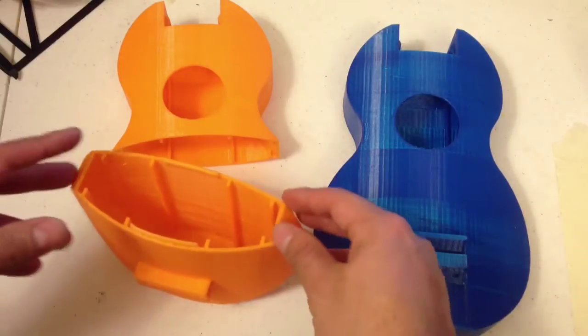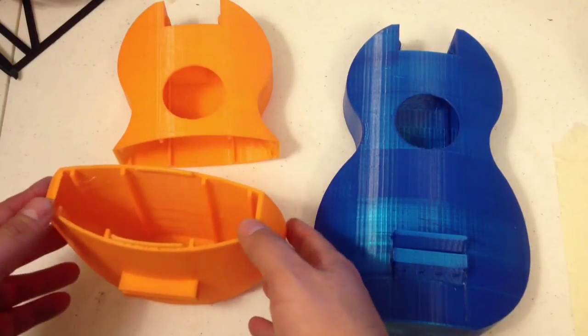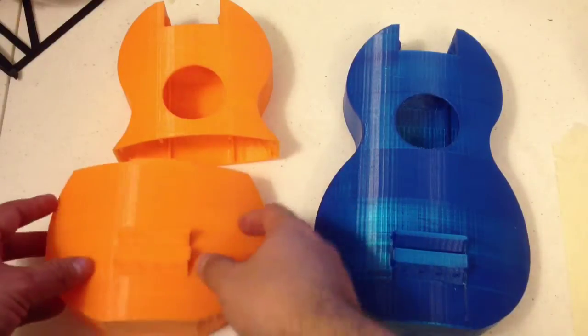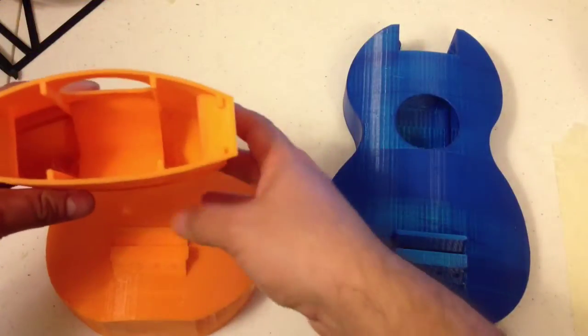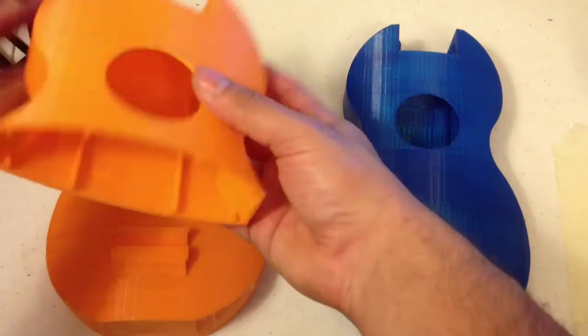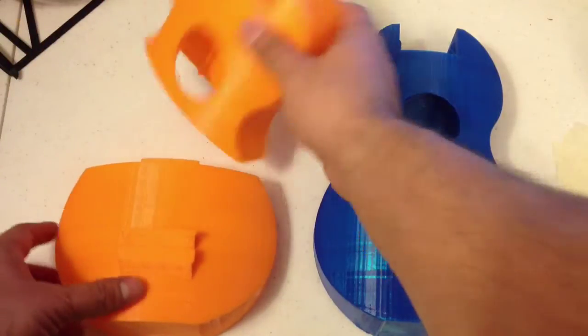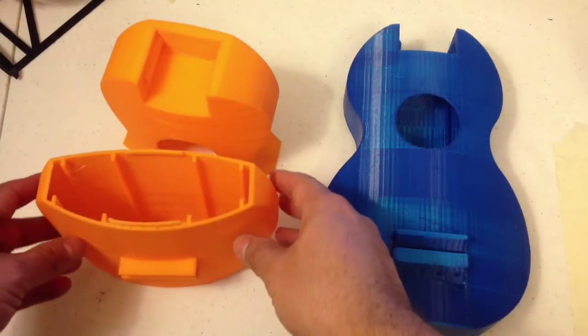What that allows is for the walls of the body, the main part, to all be 100% fill. And this large part that holds the neck, it's fairly substantial to be at 50% fill, because you don't need that to be at 100%. That helps it print just a little bit faster.